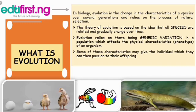In biological terms, evolution is changing the characteristics of a species over several generations and relies on the process of natural selection. The theory of evolution is based on the idea that all species are related and gradually change over time. Evolution relies on there being genetic variation in the population, which affects the physical characteristics — more like the phenotype — of an organism.